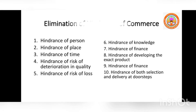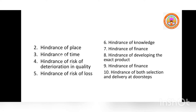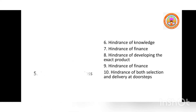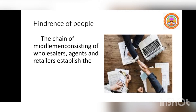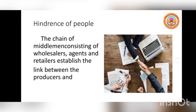The first hindrance is the Hindrance of Person. Manufacturers do not know the place and face of the consumers. It is the retailers who know the taste, preference, and location of the consumers. The chain of middlemen consisting of wholesalers, agents, and retailers establishes the link between the producer and the ultimate consumers.